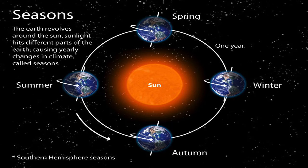The half that faces the sun has day. Jo half portion hai jo sun ke taraf face hota hai, wahaan day hota hai. And the other half portion will have night. Can you see in the figure — jo half portion zyada bright hai, wahaan pe day hai, aur peeche wala portion jahan sun nahi hai, wahaan night hoga.